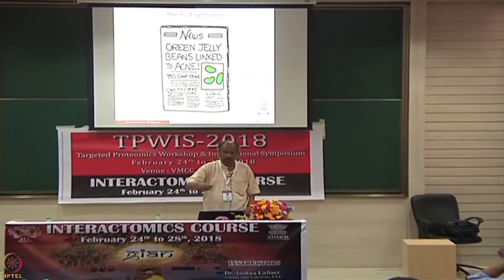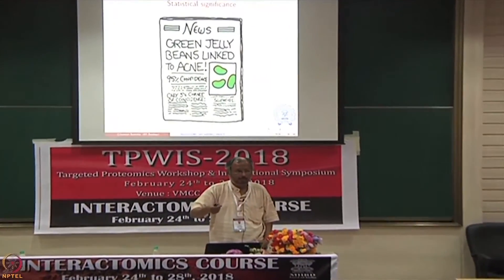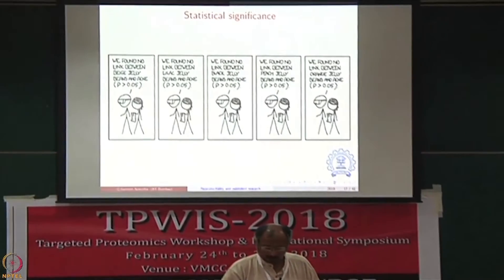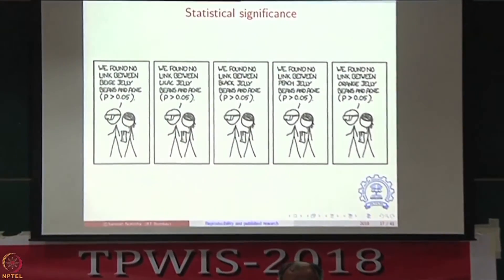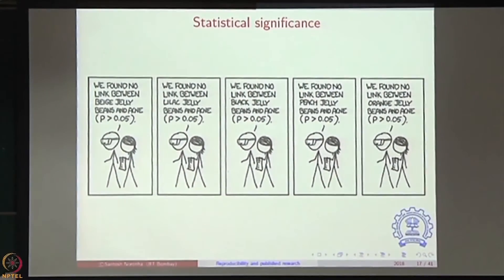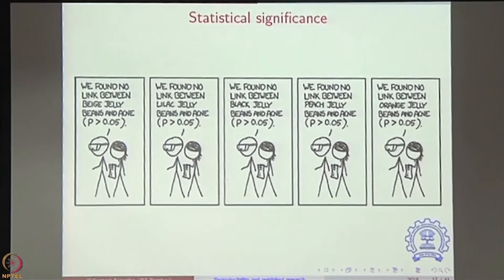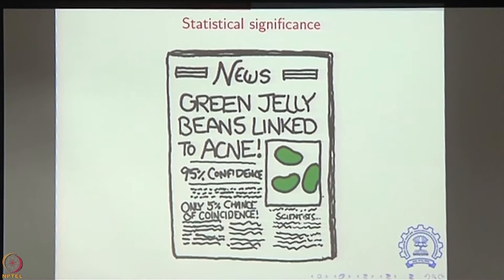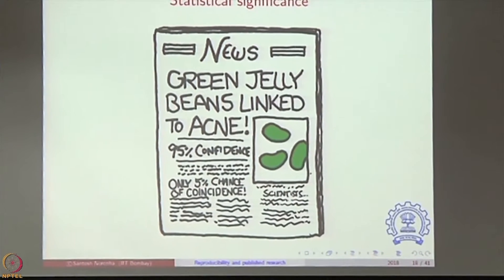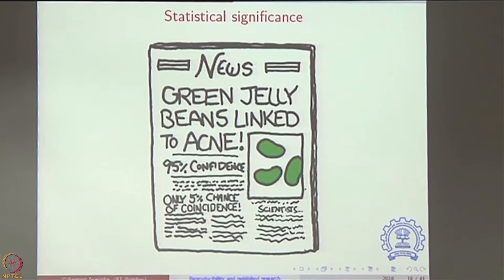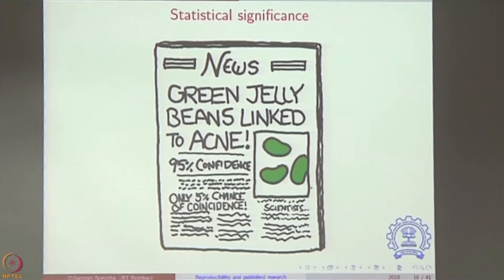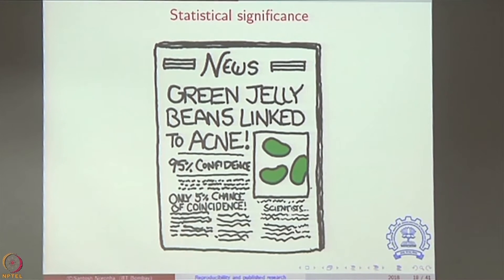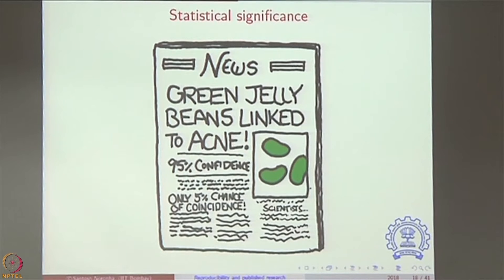If you are in the publishing game, it is very important to notice that publications do not allow you to publish negative results. So the only thing you can publish is a particular positive result. There is pressure on you to find that needle in a haystack and publish it — that is the nature of confirmation bias and p-hacking, which pushes you into focusing entirely your research on one particular candidate as if it were the only relevant candidate.